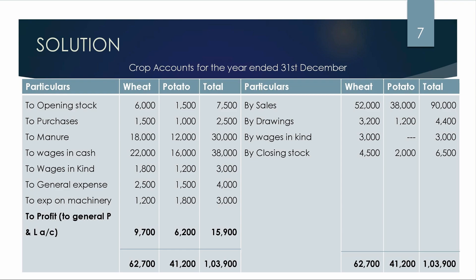Now we have the crop account — wheat crop and potato crop account. We prepare a separate crop account for each. On the debit side we have opening stock and all expenses. On the credit side we have sales and closing stock. Opening stock: wheat 6,000, potato 1,500, total 7,500. Purchase of seeds: wheat 1,500, potato 1,000, total 2,500. Purchase of manure: wheat 18,000, potato 12,000, total 30,000. Wages paid in cash: wheat 22,000, potato 16,000, total 38,000.